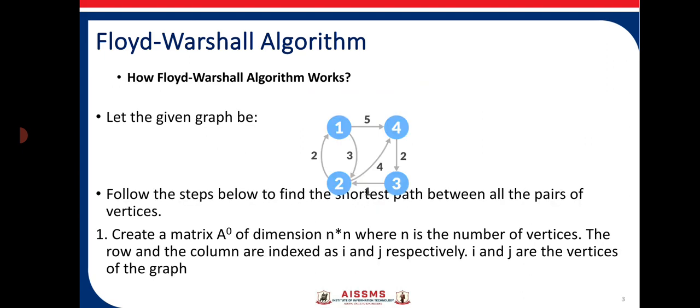Let us consider one example. Here we have a graph with four vertices: 1, 2, 3, and 4. It's a directed graph showing the edges from one vertex to another with direction, and it is a weighted graph showing the weight on every edge. To learn how the Floyd-Warshall algorithm works, we will follow the steps to find the shortest path between all pairs of vertices.